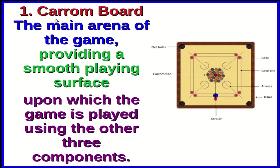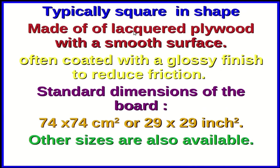Coming to the details of each component — firstly the carom board. This is the main arena of the game and provides a smooth playing surface upon which the game is played. The board is typically square in shape and made of lacquered plywood with a smooth, often glossy finish to reduce friction. The standard dimensions are 74 by 74 cm², or equally 29 by 29 inches square. Other smaller sizes are also available especially for children.